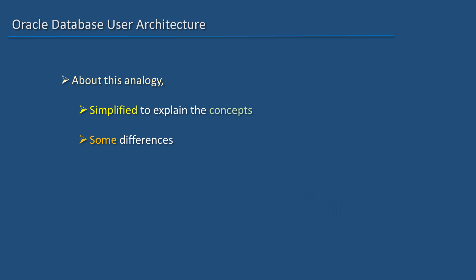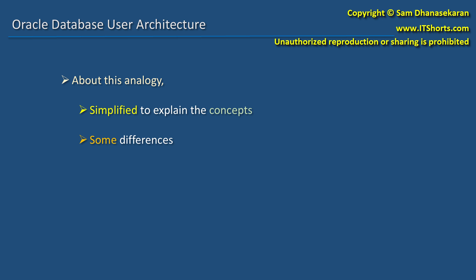I simplified the architecture so that it will be easy for you to understand if you are a beginner. Of course, as with every simplification, there will be some differences between the analogy and the real product. For example, in the analogy, plane is a machine and not a person. If we strictly compare it to the Sys user in the database, then Sys should be a rigid entity. However, Sys is also a database user, and it's very common for a database administrator in a company to log in as the user Sys with the privilege SysDBA. I hope you are able to understand the user architecture. Thank you for watching this video.